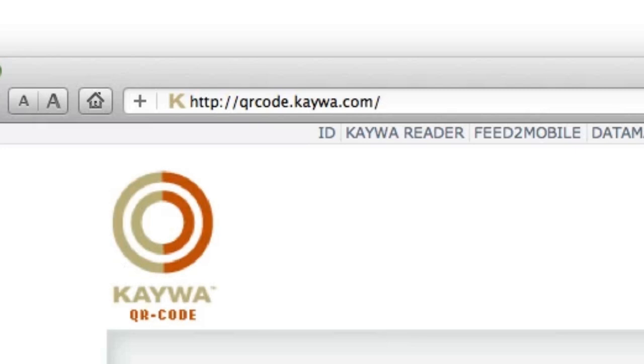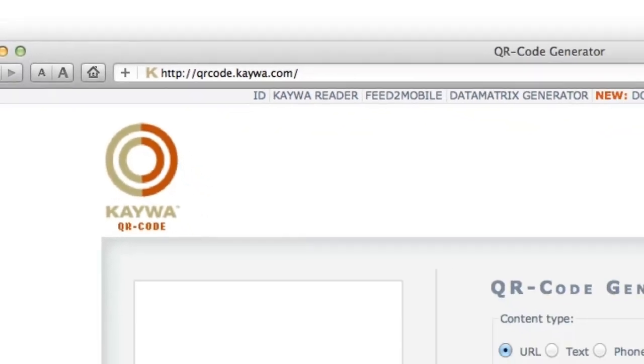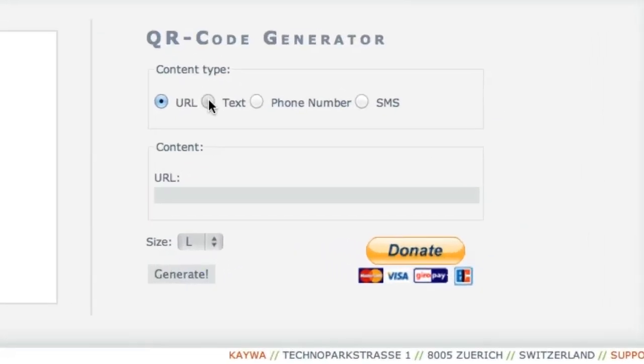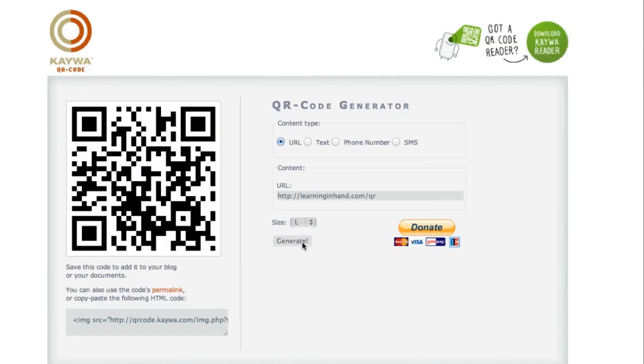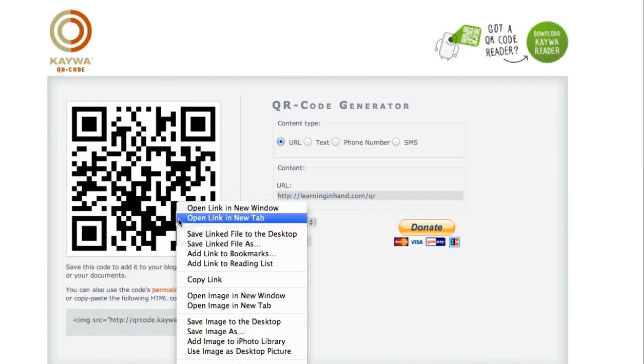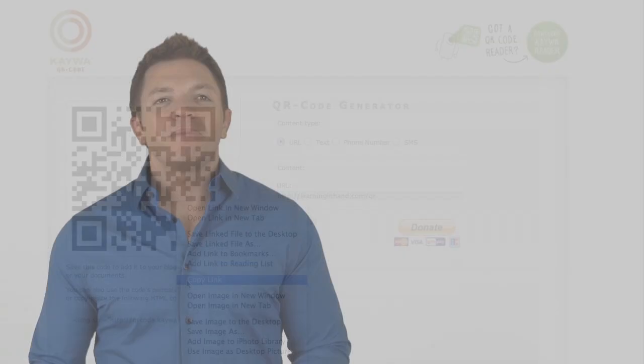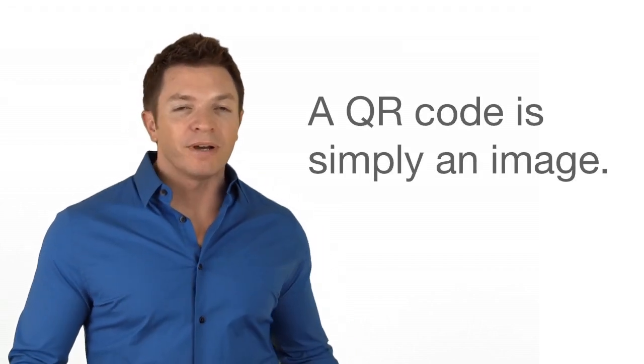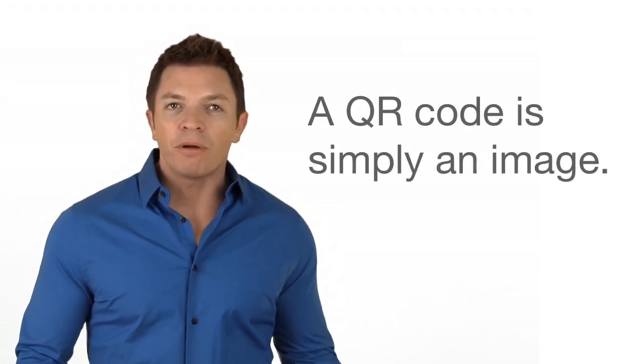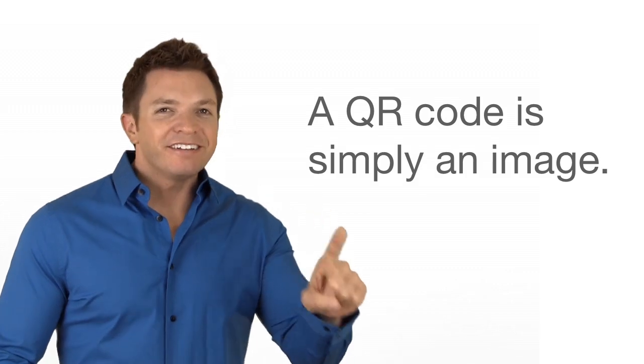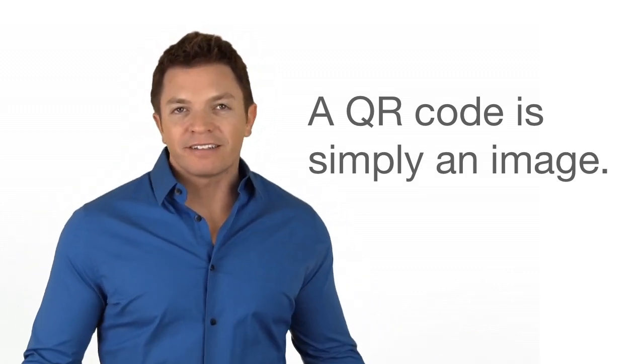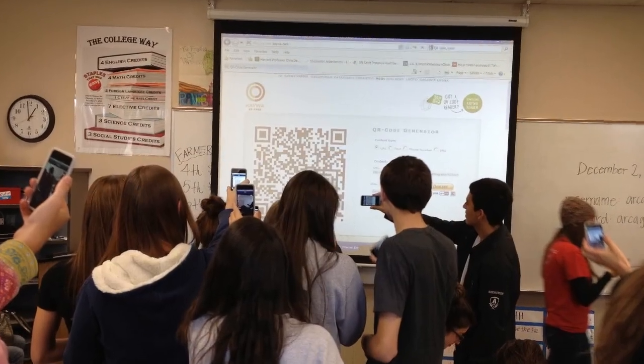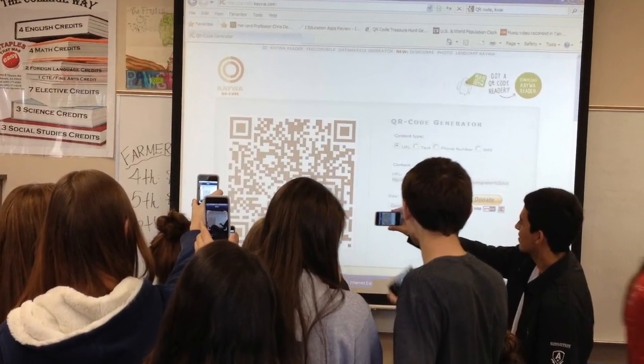I like qrcode.kaywa.com because it is very basic. To make a code, first choose URL or text. Type or paste into the box and your code is created. Right-click to save or copy the image. Since the code is just like any other image, you can paste it into documents like a PowerPoint slide, a Word document, or a Smart Notebook file. Because it's an image, you can print the code out, save it for later, post it to a learning station, or show it to your class right from the kaywa.com web page itself.